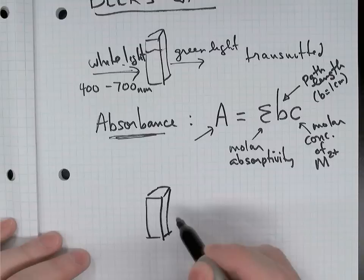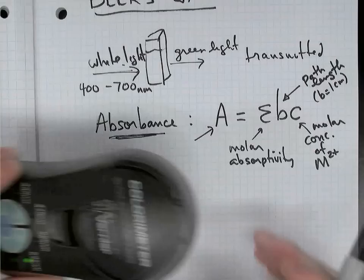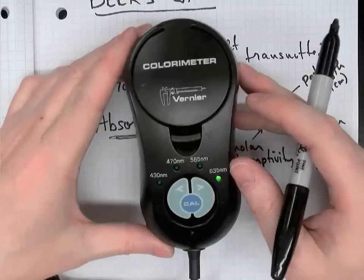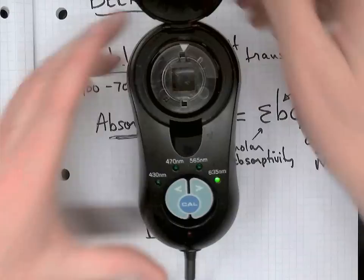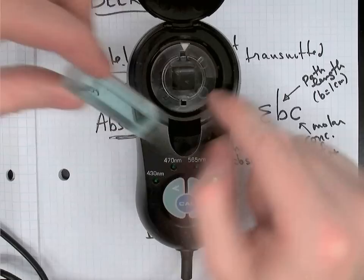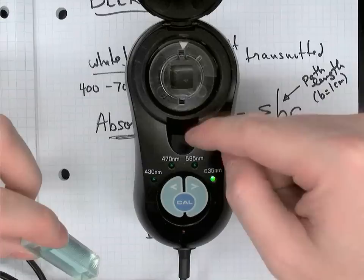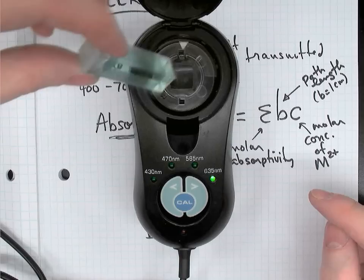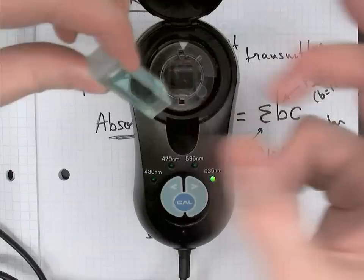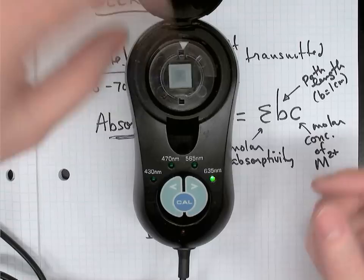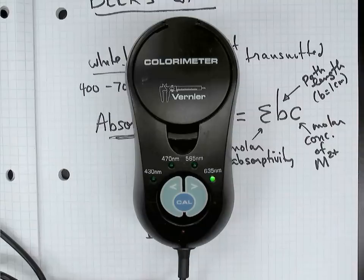Absorbance has a more rigorous definition. We're going to use something called a colorimeter, which has four different wavelengths of light that you can shine through a solution. You open up the lid, drop the cuvette in so that the ridged sides you can touch are left and right, and the clear sides where light travels through are aligned with the direction of the white arrow. I've dried the cuvette with a tissue, removed any air bubbles, and ensured there are no fingerprints before dropping it in and closing the lid to prevent outside light from entering.